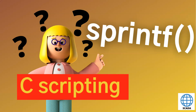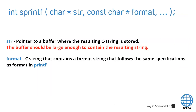Hello and welcome. Today we go with sprintf functions in C scripting for WinCC version 7. The sprintf function is used to transfer a value to a buffer, and we can use this buffer to work with more elements inside scripts.